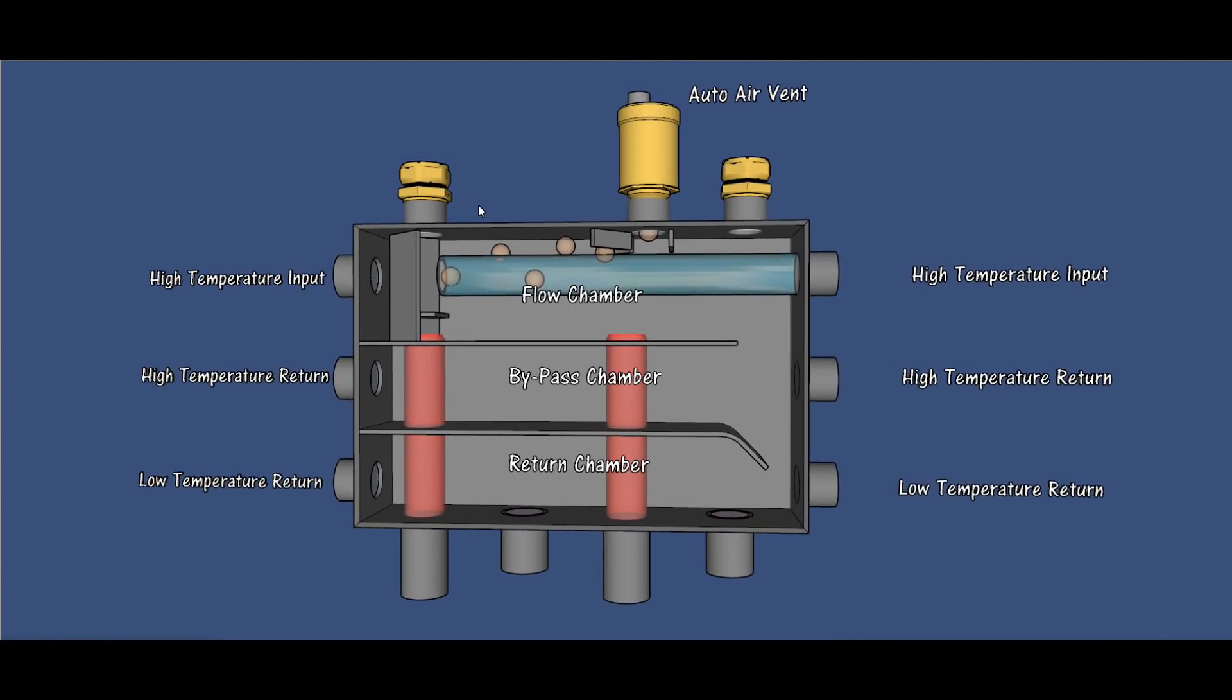At the top of the manifold there are three additional ports. The left hand one could be for a temperature sensor - it could be a boiler input, it could even be a zone output. You could take your flow, pump, and back around into one of the returns.